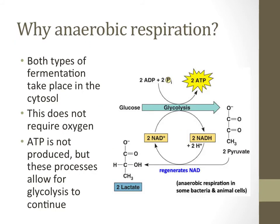Since both types of fermentation produce a waste product and are pitifully inefficient, why would organisms even bother with anaerobic respiration? First, not all organisms possess mitochondria, which is a requirement for aerobic respiration — the only means by which bacteria can produce ATP is through fermentation. Second, anaerobic respiration does not require oxygen. When humans are performing especially strenuous activity, not enough oxygen can get to different tissues like muscles, so humans can do lactic acid fermentation. A buildup of lactic acid in your muscles is probably responsible for soreness after exercising.